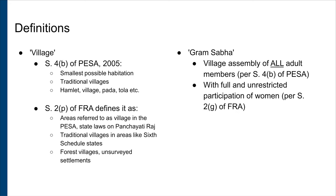This definition is important because in many states' Panchayati Raj laws, the Gram Sabha comprises only those adults who are on the electoral rolls. In some states, only one member per household is a member of the Gram Sabha. Also, the Gram Sabha under the Panchayati Raj laws encompasses a number of villages and therefore diverse communities. Such a Gram Sabha will find it very difficult to fulfil its duties and powers under the FRA.